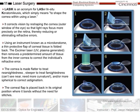Here's the flap sitting over here. Then they bring in an excimer laser, which is a UV laser, and they remove a predetermined amount of tissue to reshape the cornea. Then they put the flap back on, and the body will heal itself — it bonds without the need for any stitches over time. The cornea is made flatter to treat nearsightedness, steeper to treat farsightedness, and more spherical to correct astigmatism.